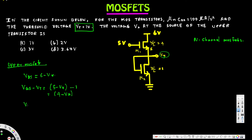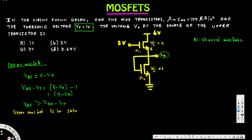We can see that VDS (which is 6 minus Vx) is greater than VGS minus Vt (which is 4 minus Vx), so the upper MOSFET is in saturation.